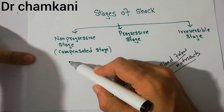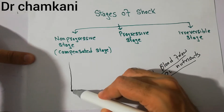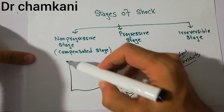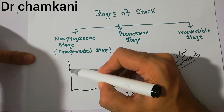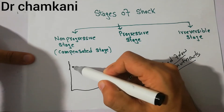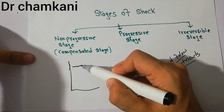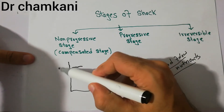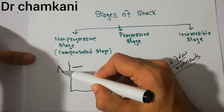If we consider a graph, we can see that this represents the amount of blood flow — this is the normal amount of blood flow to a tissue.